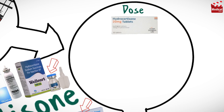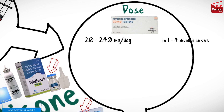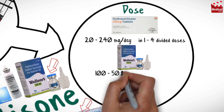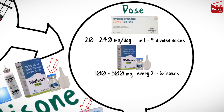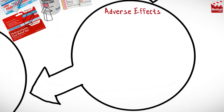Dosages of corticosteroids are variable and should be individualized according to the disease being treated and the response of the patient. The usual oral dose for adults is 20 to 240 milligrams per day in one to four divided doses. The usual intramuscular and intravenous dose of hydrocortisone sodium succinate for adults is 100 to 500 milligrams every two to six hours. The usual topical dose for adults is to apply to affected areas one to four times daily depending on preparation and condition being treated.